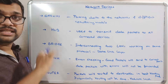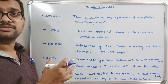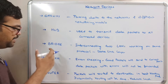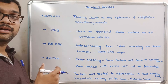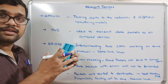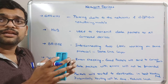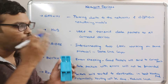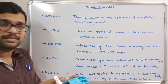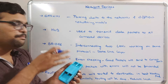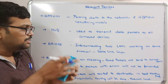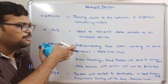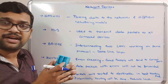So these are the basic network devices used in networking: repeater, hub, bridge, switch, router, and gateway. The repeater simply regenerates the signal. The hub transmits data packets to all connected devices. The bridge, based on MAC address, interconnects two different LANs working on the same protocol.